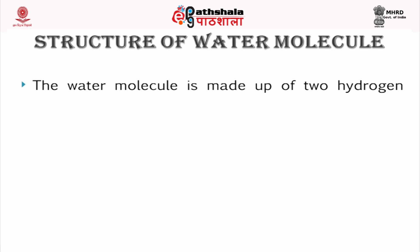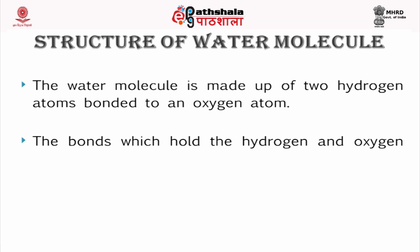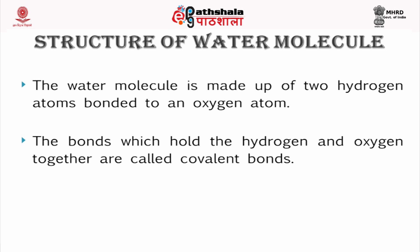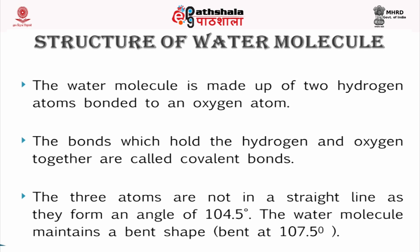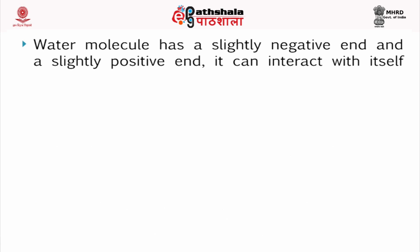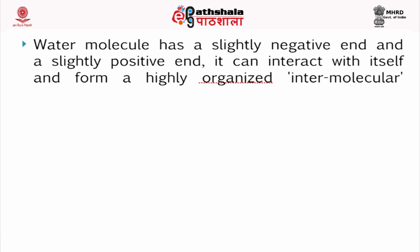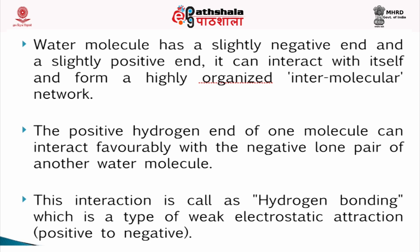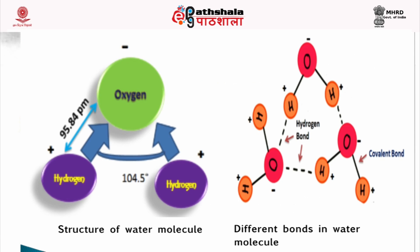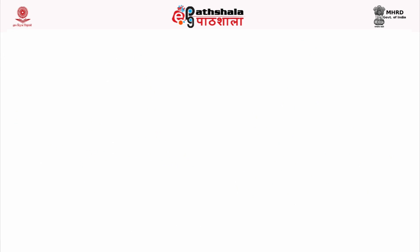The water molecule is made up of two hydrogen atoms bonded to an oxygen atom. The bonds which hold the hydrogen and oxygen together are called covalent bonds. The three atoms are not in a straight line; they form an angle of 104.5 degrees. The water molecule maintains a bent shape of 107.5 degrees. The water molecule has a slightly negative end and a slightly positive end. It can interact with itself and forms a highly organized intermolecular network. The positive hydrogen end of one molecule can interact favorably with the negative lone pair of another water molecule. This interaction is called hydrogen bonding, which is a type of weak electrostatic attraction. This is the structure of the water molecule showing the negative and positive charge, and the right-hand side shows the hydrogen bond and the covalent bond.